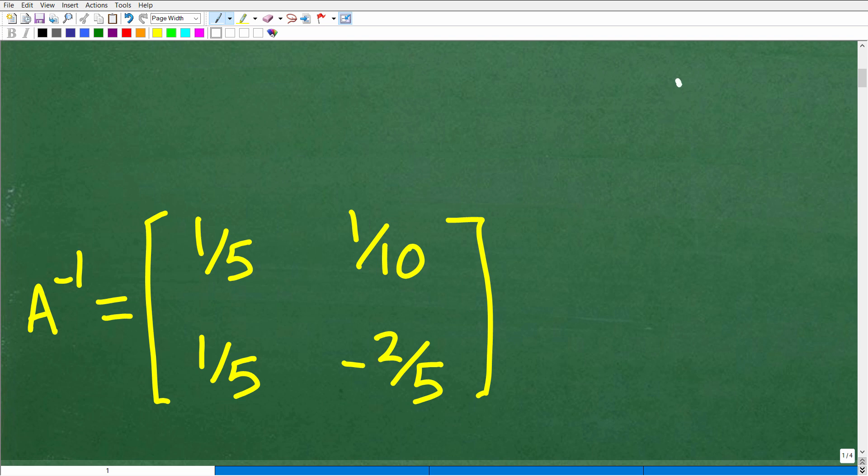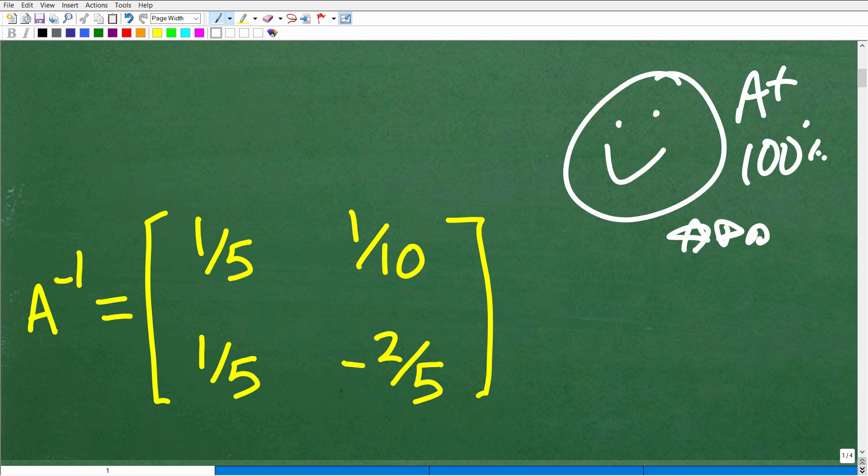So, how did you do? If you got this right, that is fantastic. I'm going to go ahead and give you a happy face, an A+, a 100%, and multiple stars, so you can tell your friends and family that you know exactly how to find the inverse of a 2 by 2 matrix.